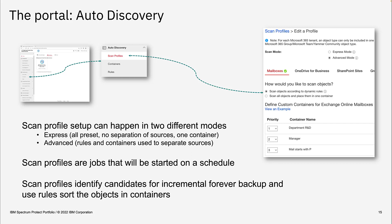Scan jobs are started on a schedule, which is defined when you set up the scan rule. The scan rules also identify candidates for incremental forever backup — they scan the Microsoft tenant and automatically identify new mailboxes and new content in existing mailboxes, ensuring that incremental forever backup is processed so only changed or new objects are backed up and sorted into the containers.